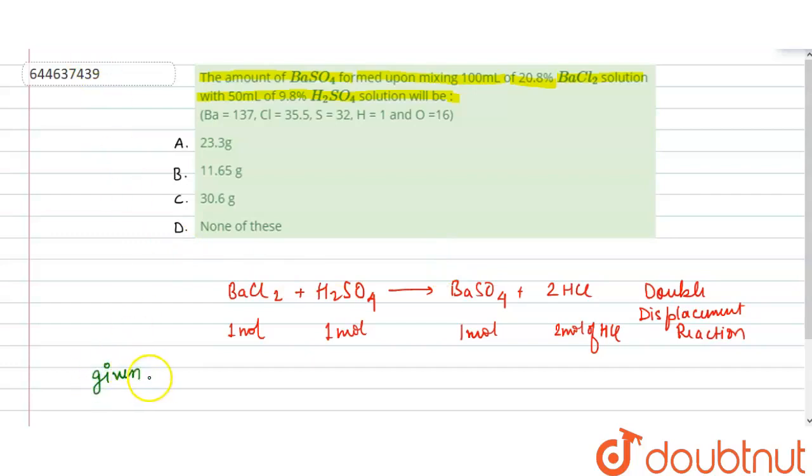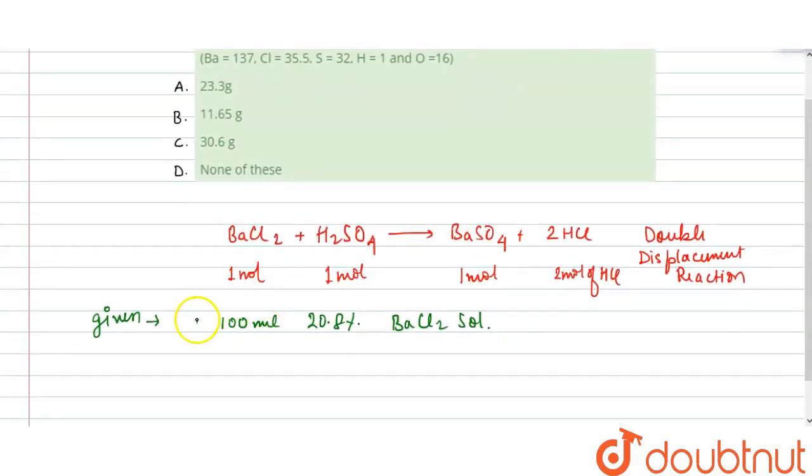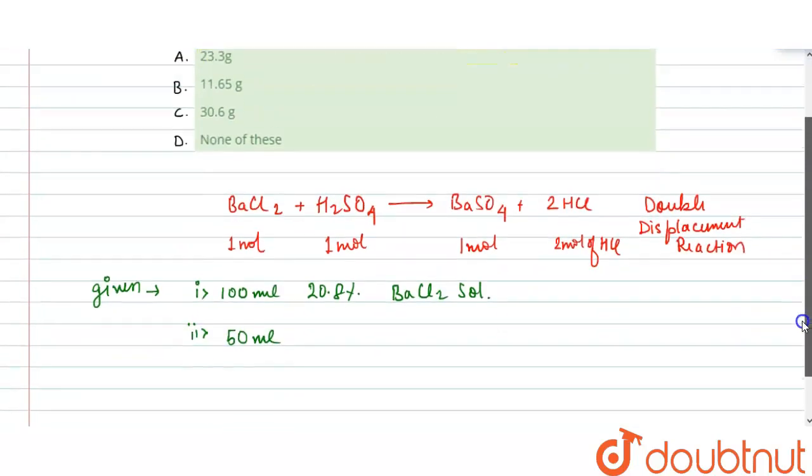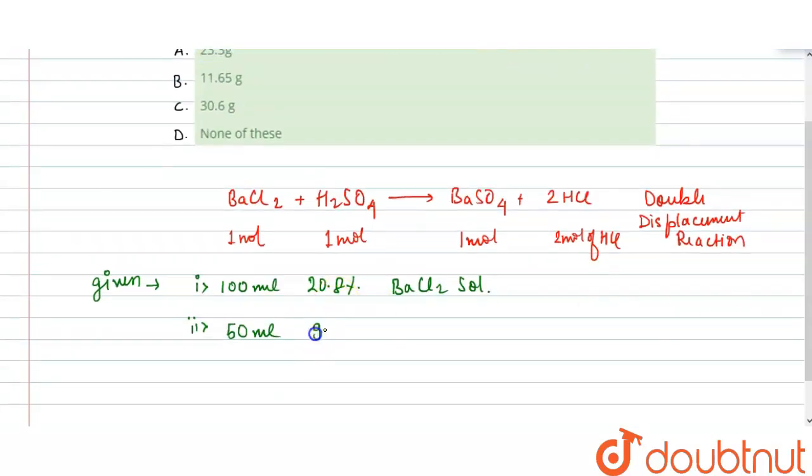Given is: 100 ml, 20.8% barium chloride solution, and the second one is 50 ml of 9.8% H2SO4.